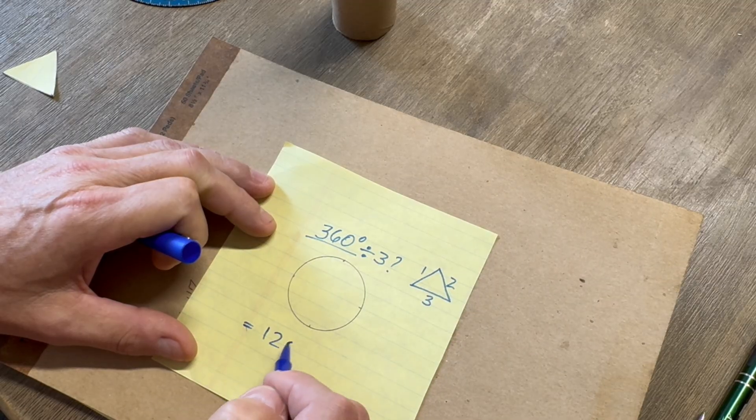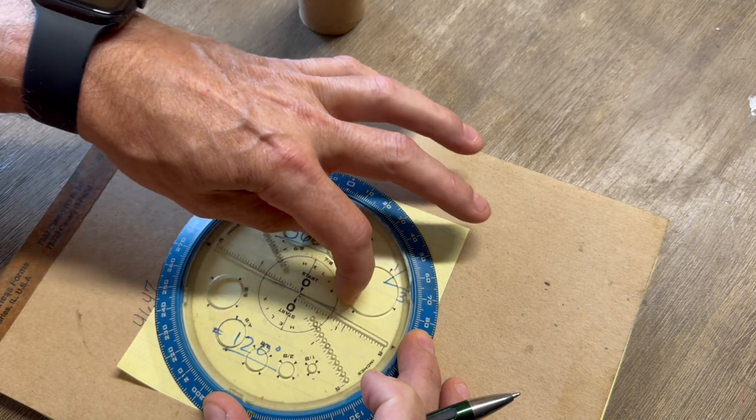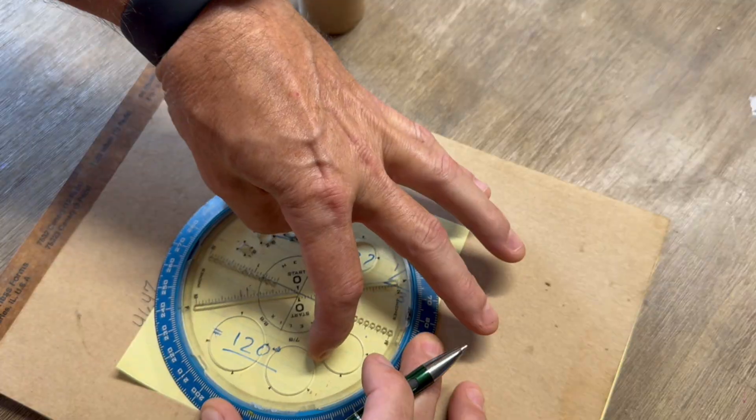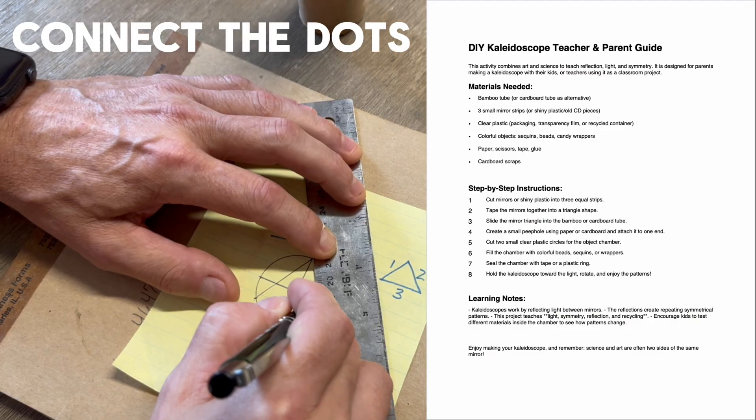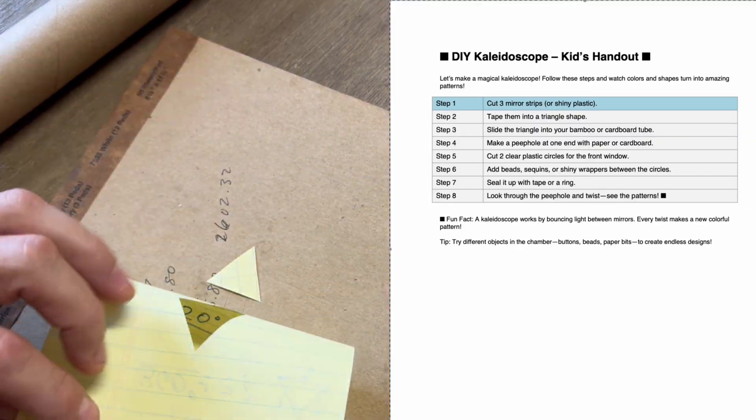And if getting these measurements is still too difficult, in the description I've included three PDF files. One is a diagram for finding the exact size triangle for your cylinder of choice. Two is a list of all materials needed for this project. And three are step-by-step instructions for your kaleidoscope build.